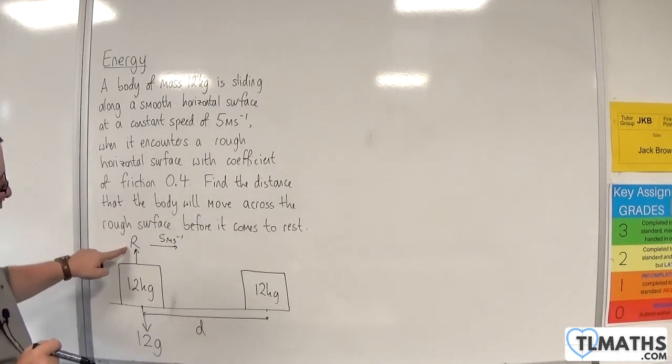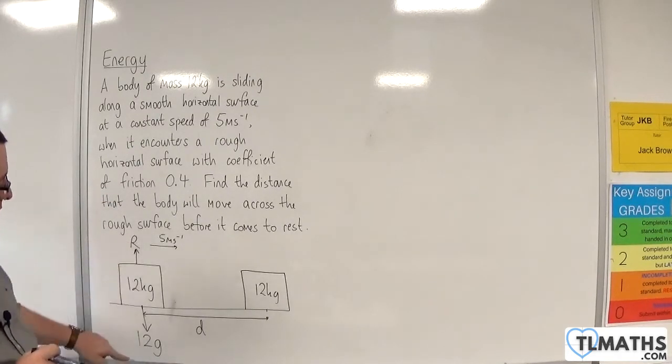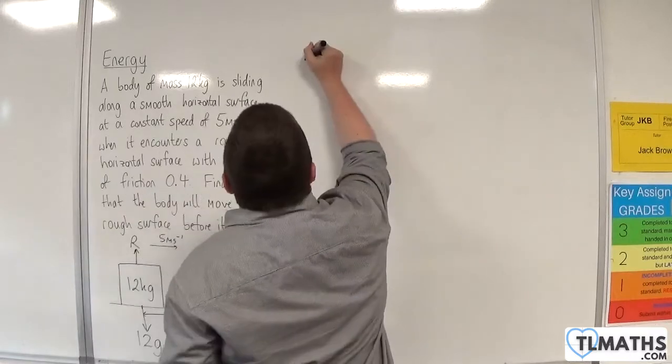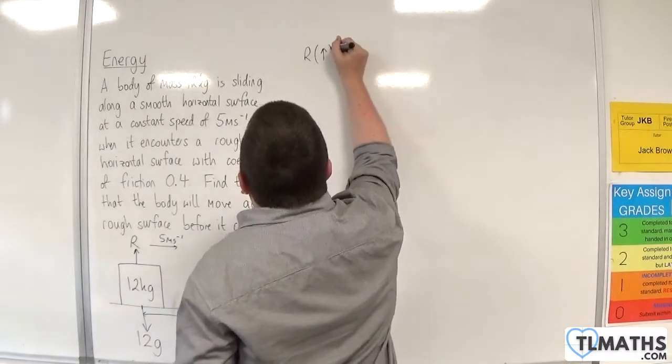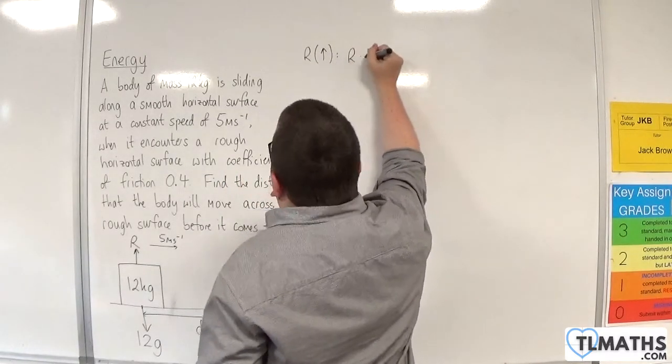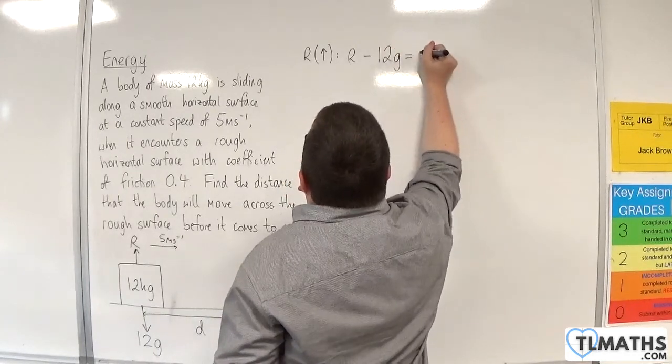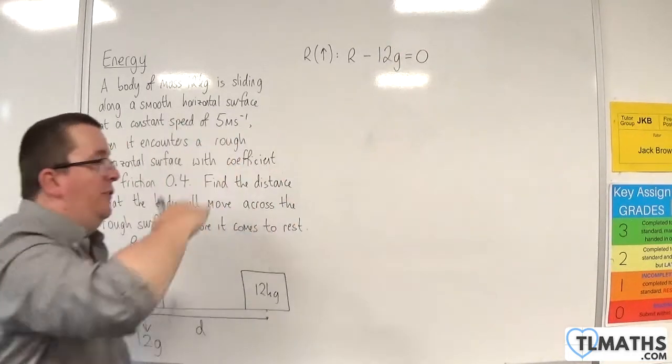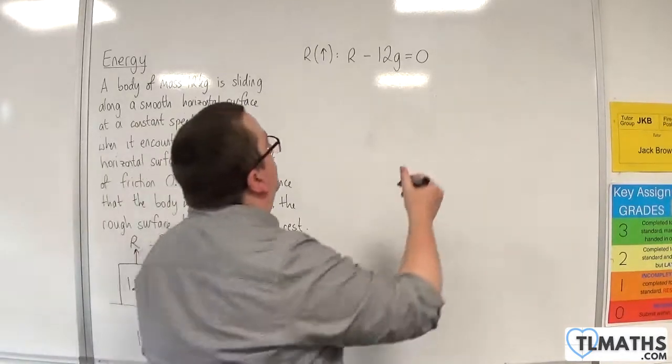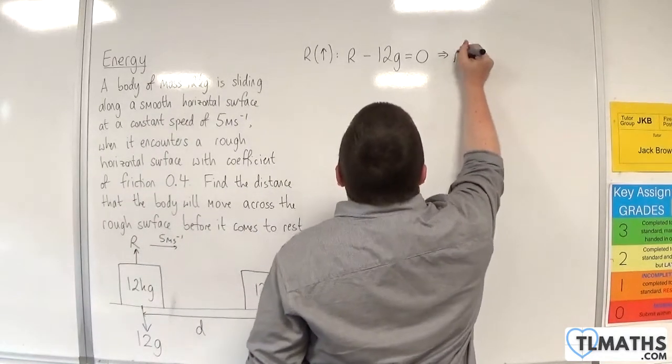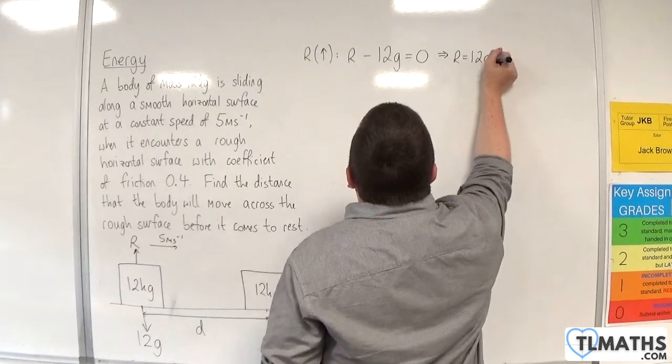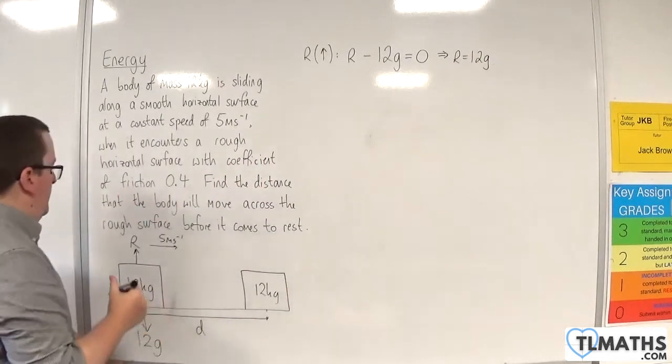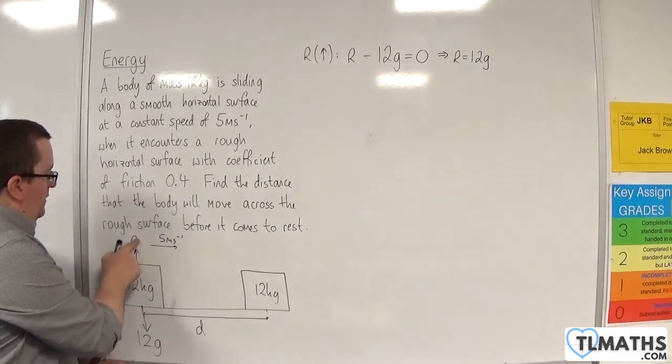In order to work out R, we need to resolve vertically. So I'm going to resolve vertically, taking upwards as positive. R take away 12g will be equal to 0, because we're not going to be accelerating vertically. So R is 12g.